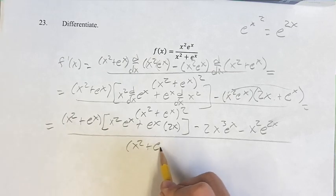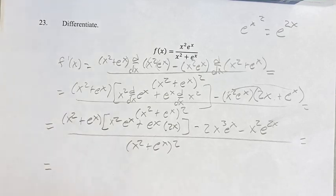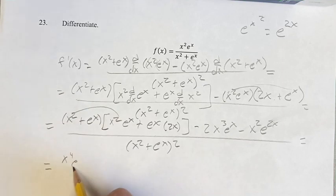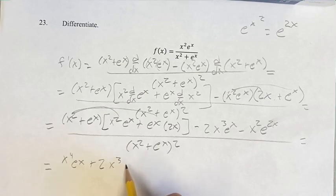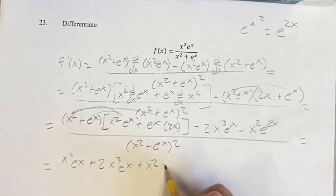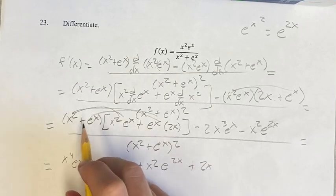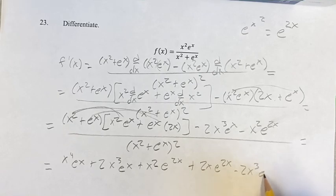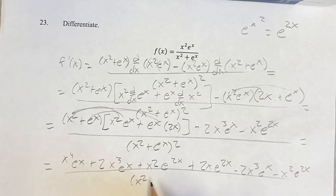This is over x squared plus e to the x, squared. Simplifying further, we get x squared times x squared is x to the 4th e to the x, plus 2x times x squared is x cubed e to the x, plus x squared e to the x times e to the x which is e to the 2x, plus 2x e to the x times e to the x which is e to the 2x. This is minus 2x cubed e to the x, minus x squared e to the 2x, over the same denominator.